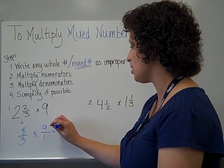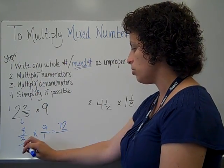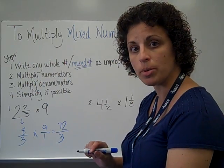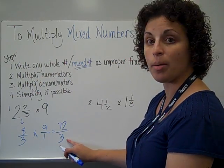All right, well this is going to give me 8 times 9, which is 72, 3 times 1, which is 3. This one is quite large and needs to be simplified as an improper fraction.